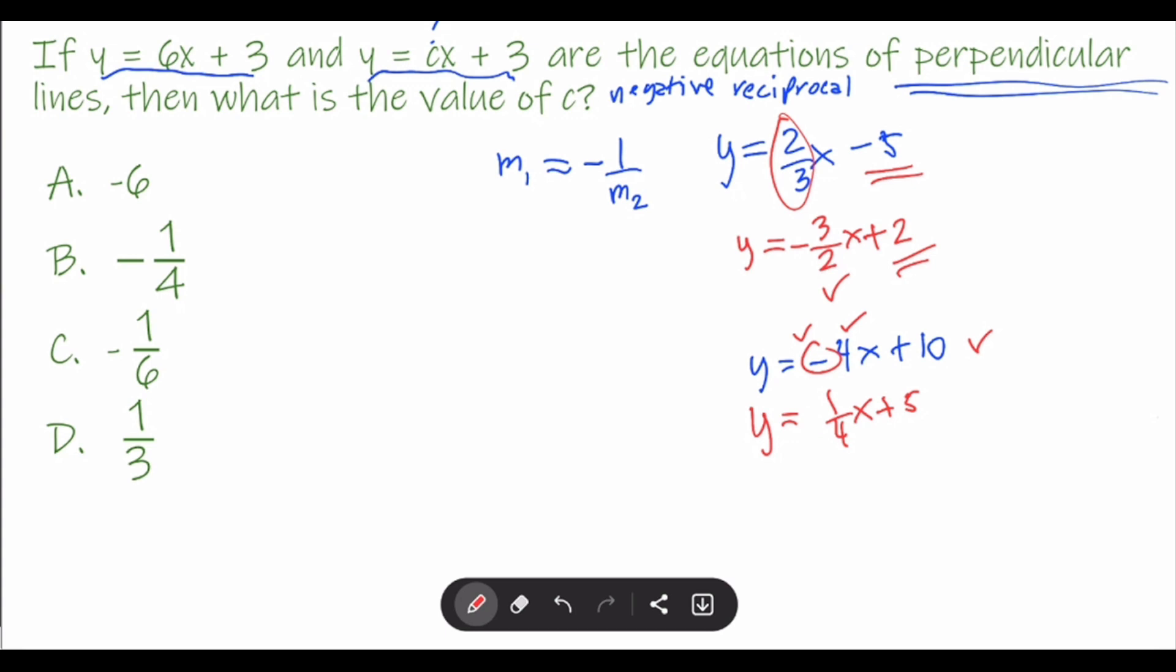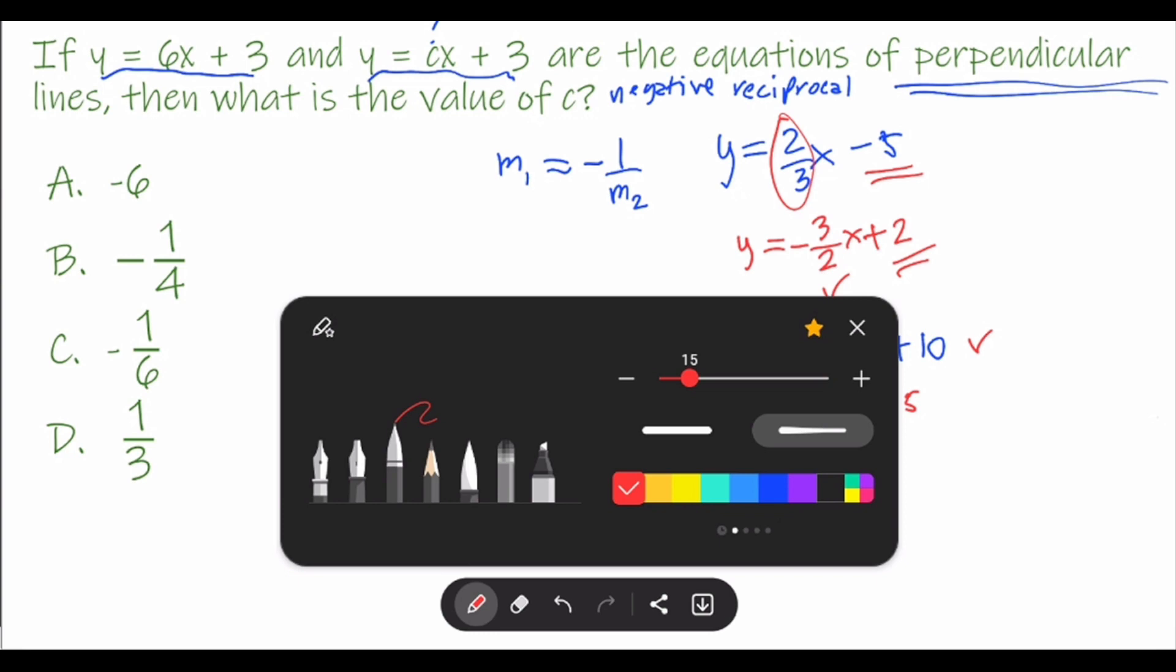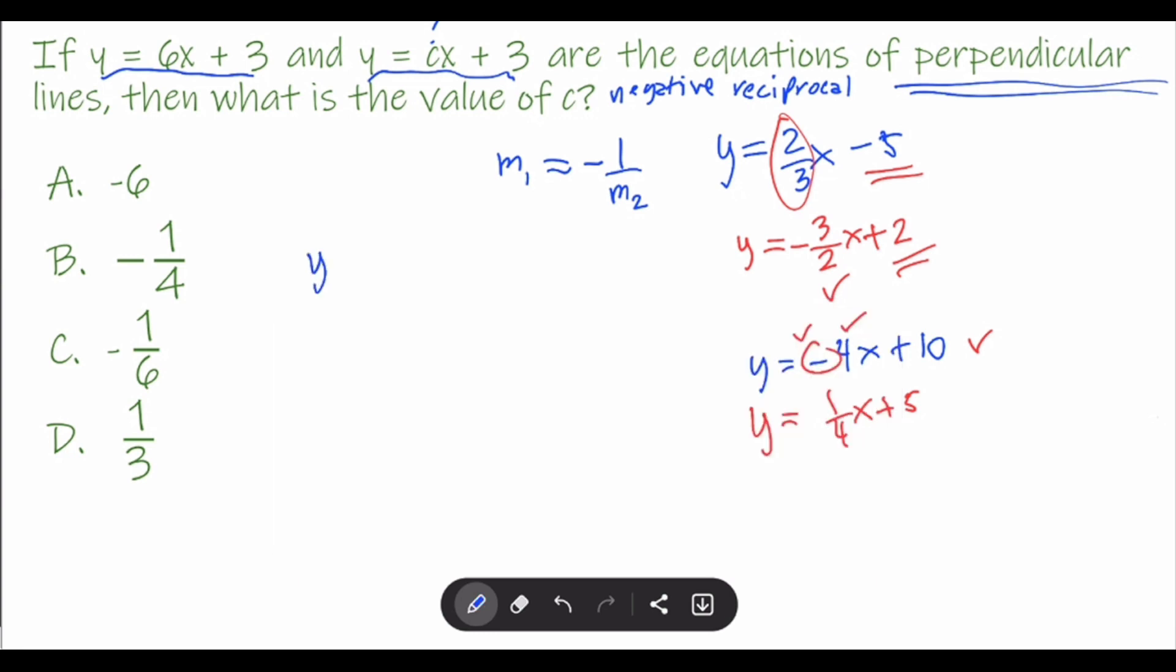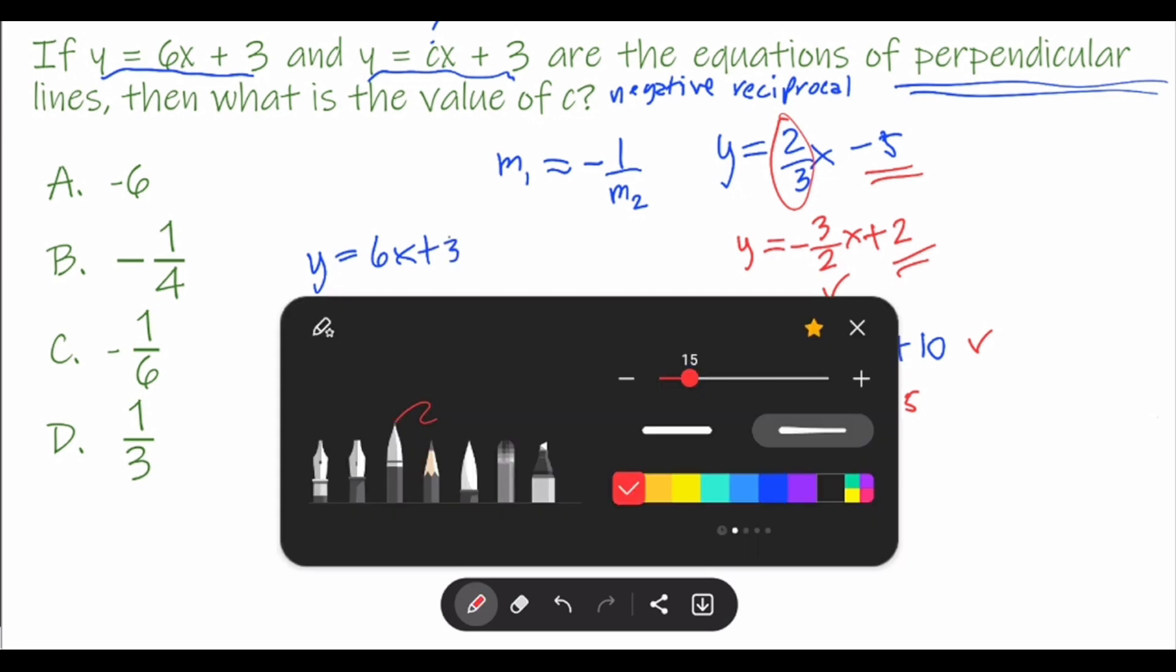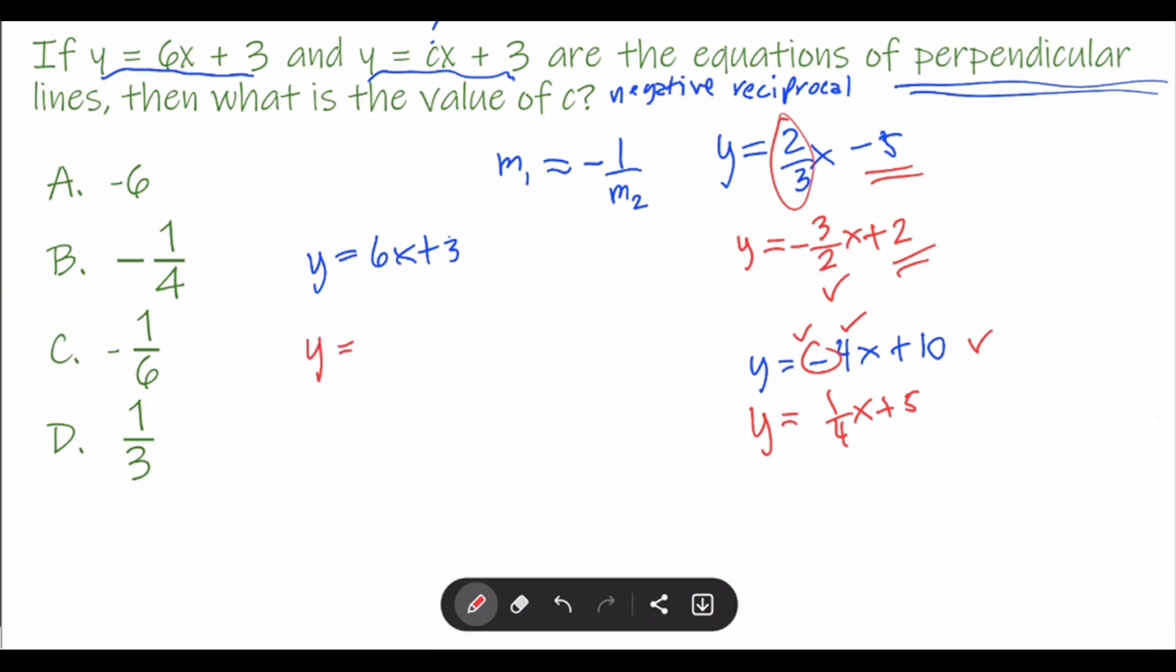Now going back to our problem, the equation is y = 6x + 3, and the second equation, which is a perpendicular line, is y = cx + 3. What do you think c is? C must be the negative reciprocal of this. If you take the reciprocal of 6, it's 1/6, and then the opposite sign, which is negative. So c equals -1/6, and that is letter C.